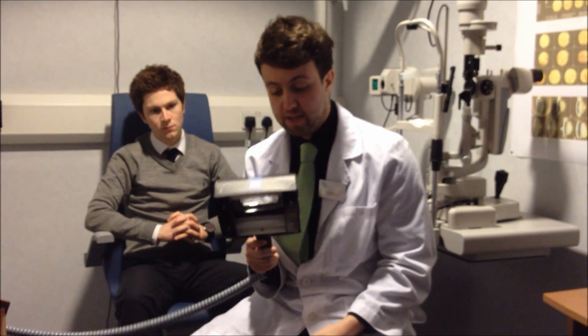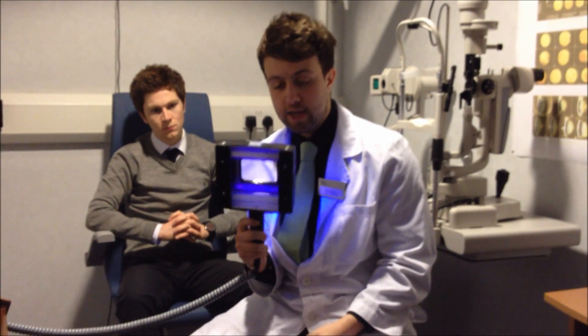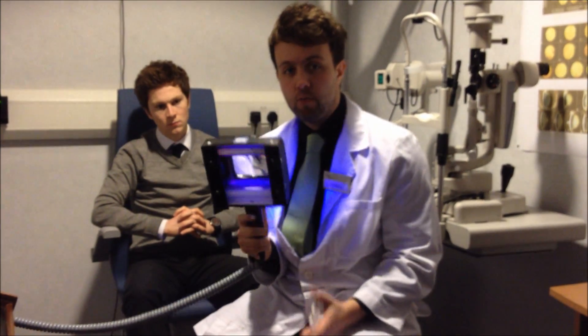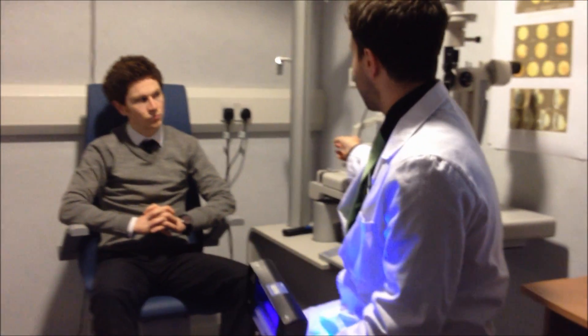So now that we've done our history and symptoms, the next thing we want to do is just take some ocular measurements. All we need for that is a ruler, the button lamp here which we'll use to assess the pupils, so it's got two light settings, blue light and white light, and then we'll also take the K readings using the keratometer here.